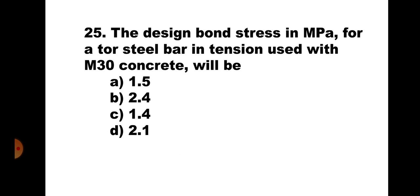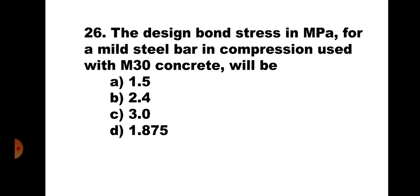Question 25. The design bond stress in MPa for a Tor steel bar in tension used with M30 concrete will be: A. 1.5, B. 2.4, C. 1.4, and D. 2.1. From the IS-456 table, Tau BD is given for plain bars in tension. For a Tor steel bar, the table value is increased by 60%, so multiplying by 1.6 gives 2.4. Hence, the correct answer is B. 2.4.